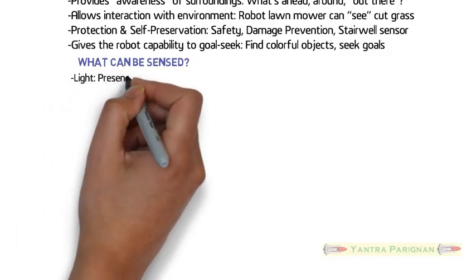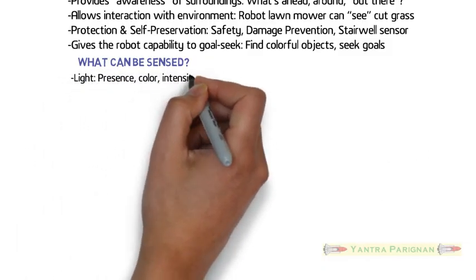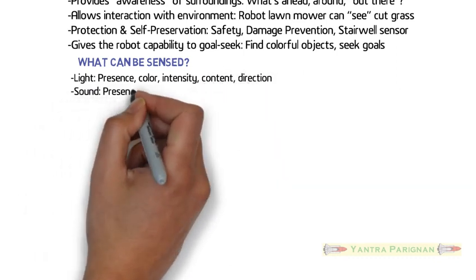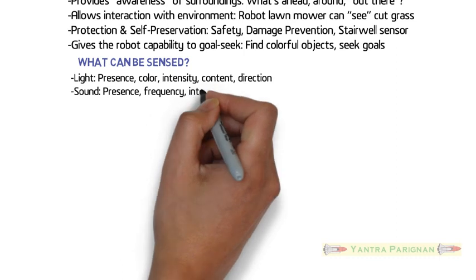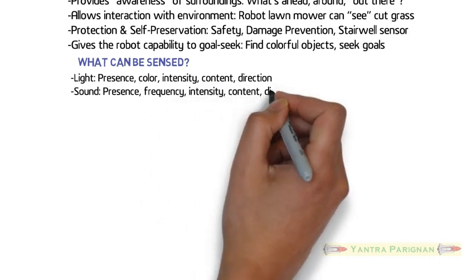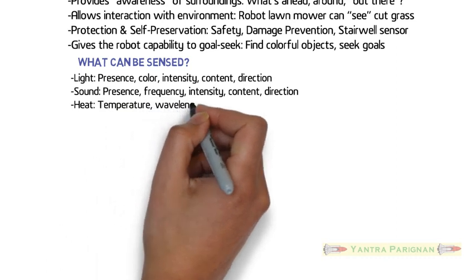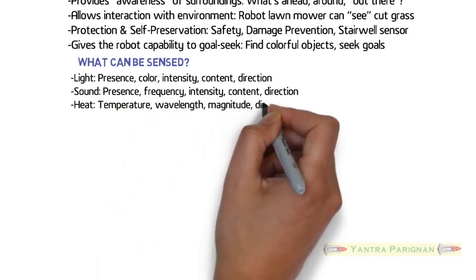What can be sensed by sensors if attached to a robot? Can sense light, the presence of light, color of light, intensity of light, direction of light. Can sense sound, the presence of sound, frequency of sound, intensity of sound, and direction of sound.